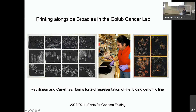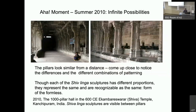This is me printing at the cancer lab, the Golub lab, where I had my own bench so I could work alongside researchers. My aha moment came while on holiday in the summer of 2010 when I visited the Thousand Pillar Hall with Shivalinga sculptures in a temple in South India from 600 CE. The pillars looked very similar from a distance, but when one comes up close, one notices the differences, the nuances, and the different combinations of patterning.